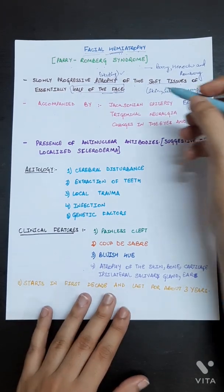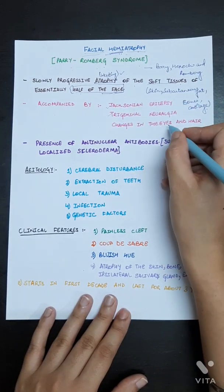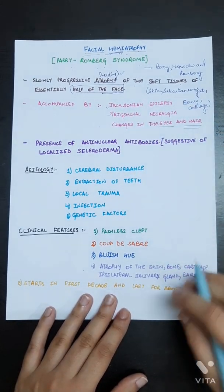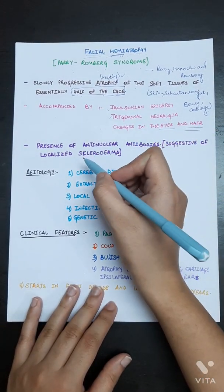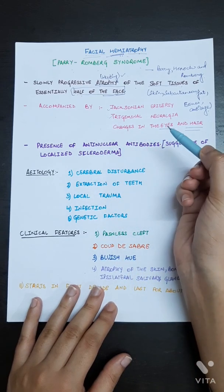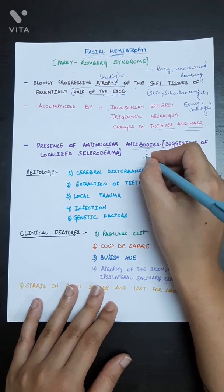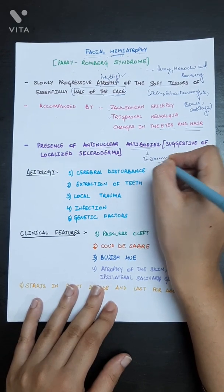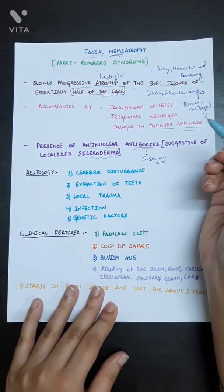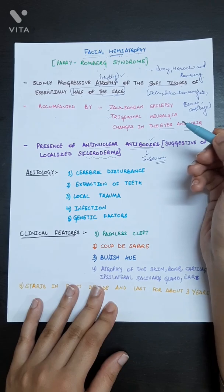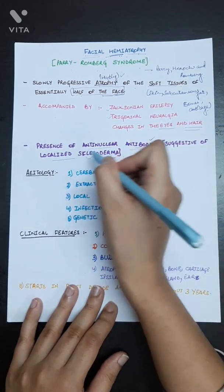It is accompanied by Jacksonian epilepsy, trigeminal neuralgia, and changes in eyes and hair in Parry-Romberg syndrome. An important fact is there is a presence of anti-nuclear antibodies in the serum of infected individuals which is suggestive of scleroderma.